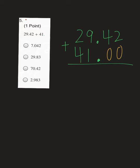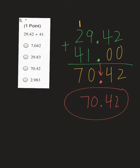Now we're ready. 2 plus 0 is 2. 4 plus 0 is 4. 9 plus 1 is 10 — put your 0, carry a 1. 1 plus 2 is 3. 3 plus 4 is 7. Don't forget the final step: drop your decimal straight down. So your final answer should have been 70.42, which would have been answer option C on your Microsoft form.